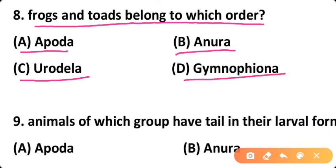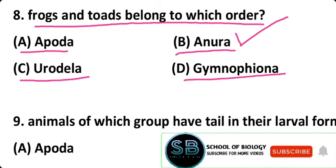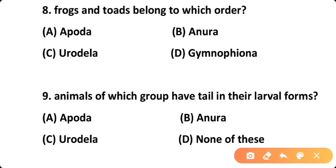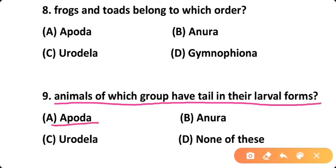Question eight: Frog and toad belong to which order? Option A: Apoda, Option B: Anura, Option C: Urodella, Option D: Gymnofiona. Correct answer is Option B — frogs and toads belong to order Anura of Amphibia. Question nine: Animals of which group have a tail in their larval forms? Option A: Apoda, Option B: Anura, Option C: Urodella, Option D: None of these. Correct answer is Option B — members of order Anura have a tail in their larval form.